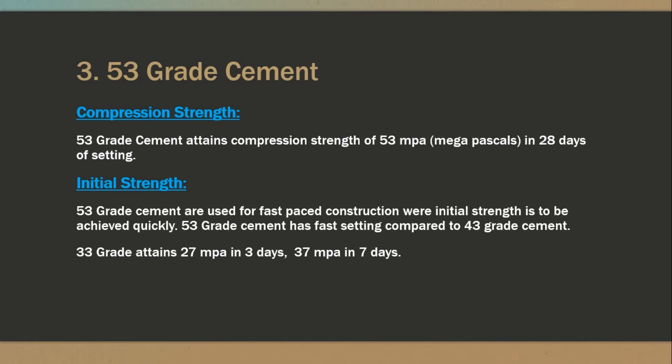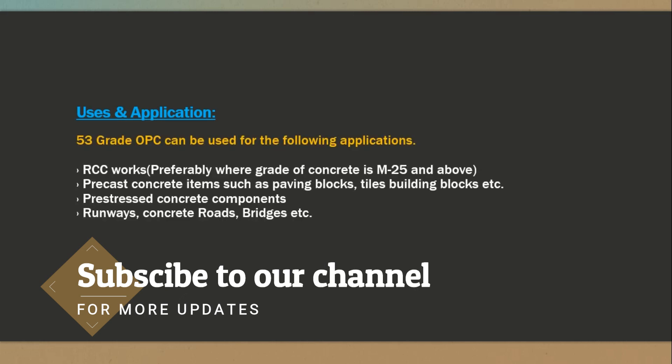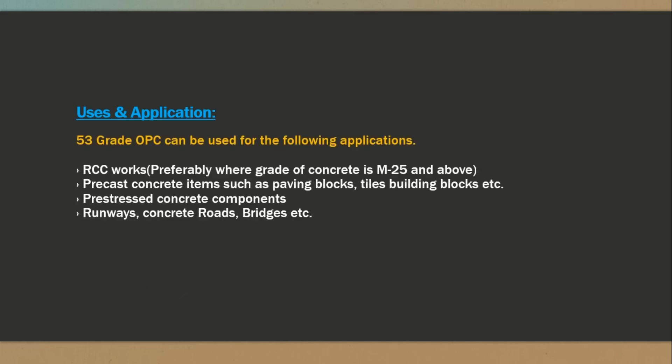53 grade cement is used for fast-paced construction where initial strength is to be achieved quickly. 53 grade has faster setting compared to 43 grade. When it comes to uses and applications, it can be used for RCC works where the grade of concrete is greater than M25, and for precast concrete items such as paving blocks, tiles, and building blocks.